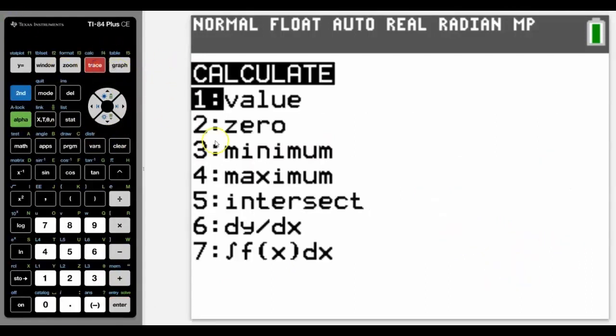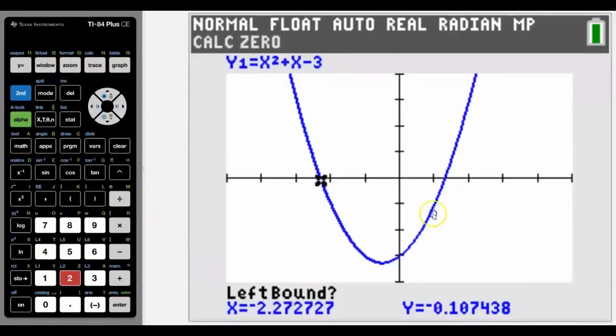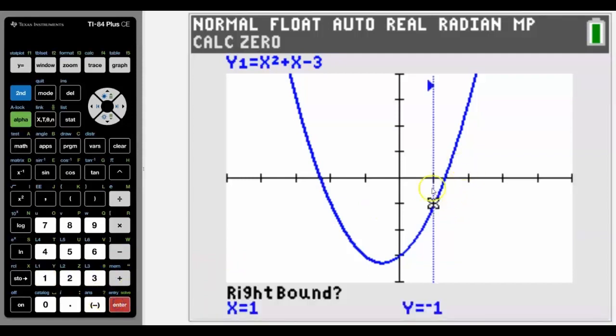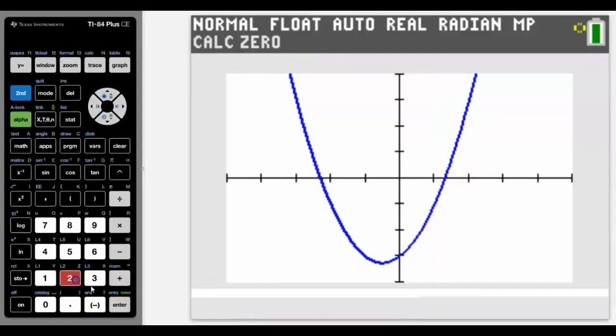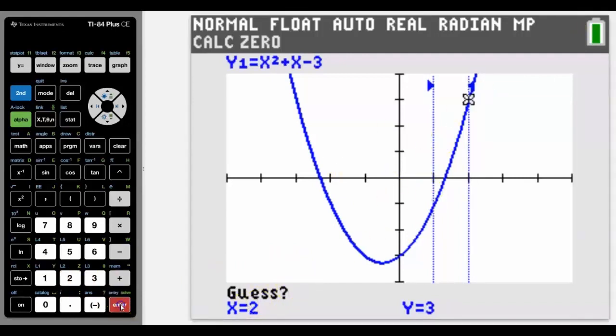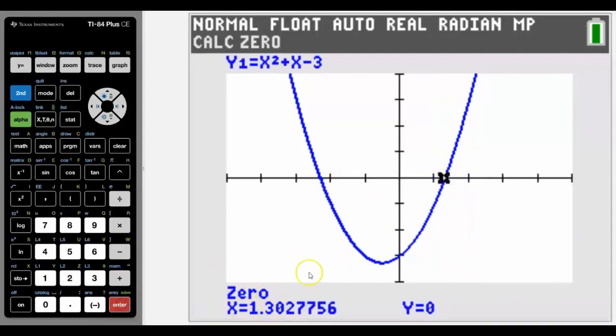Another way to find the zero without using the cursor is still to go the same sort of setup but let's say we're finding this right hand zero. We know somewhere between one and two so we can simply type in one for the left bound and the right bound is two. Again we don't need to guess because it's somewhere between those two arrows which is perfect. Press enter and it gives us that zero.